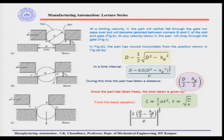These are the three positions of the part shown in the figure. Here, this is the rotary inner sleeve which is rotating, and this is the fixed sleeve which is stationary. At a limiting velocity V, if the velocity is a certain value, the part will neither fall through the gate nor pass through; instead it will jam between the slot edges b and c.